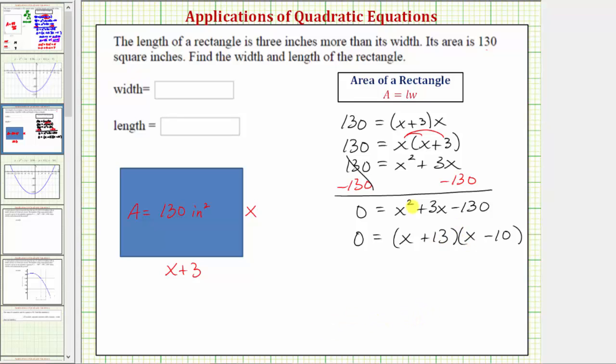And because this product is equal to zero, x plus 13 must be zero, or x minus 10 must equal zero. Solving for x here, we subtract 13 on both sides. X equals negative 13, or solving for x here, we add 10 to both sides. X equals positive 10.